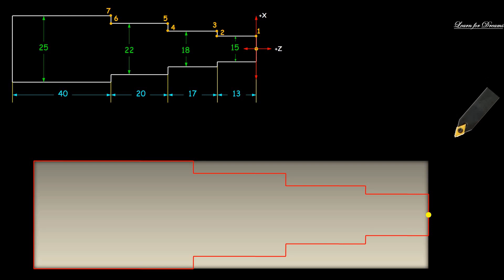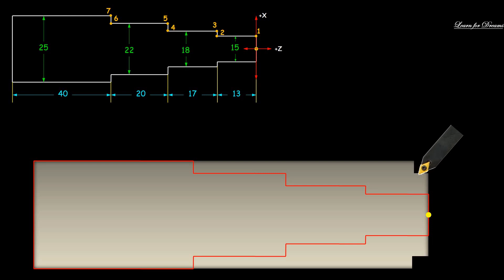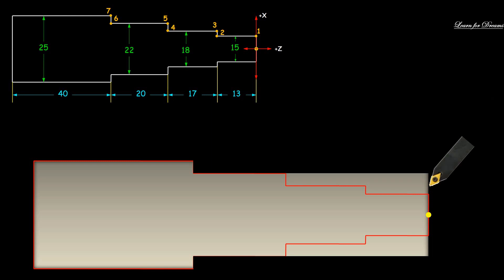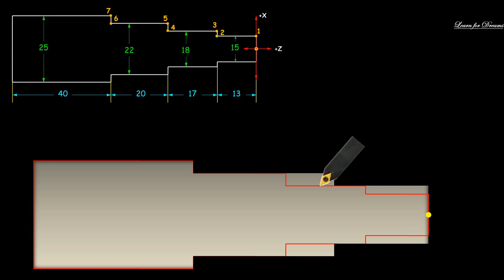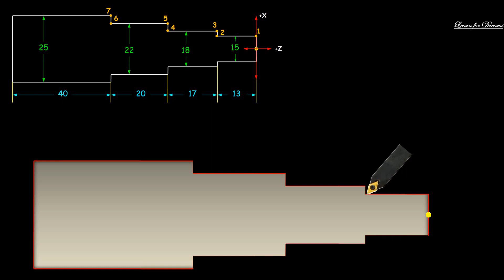Let's start and see the path traveled by the tool. First of all, we will take the tool nearer to the workpiece and then slowly move the tool to the origin. After that, we need to perform the facing operation. Then we will take the tool and start removing the material layer by layer. Again, we will take the tool to the home position and this process repeats until we get the required design.